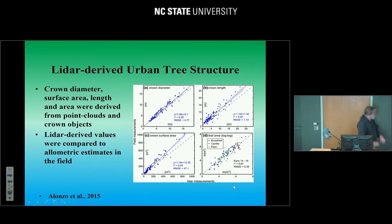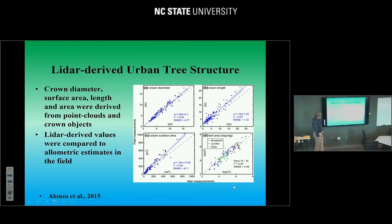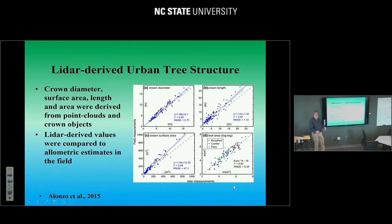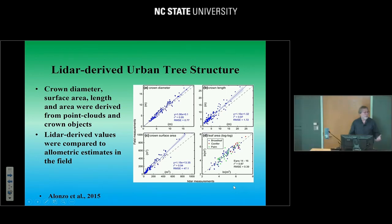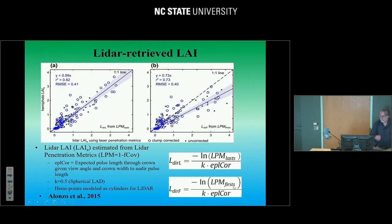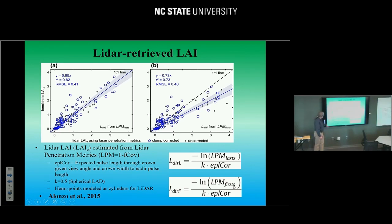He also looked at urban tree structure. He had a whole series of U4 plots developed with a combination of his own work and undergraduate help, comparing plot measurements to various LiDAR structural measures such as crown diameter, crown surface area, crown length, and leaf area on a log-log plot — and they're all pretty well correlated. In terms of forestry applications in the urban environment, LiDAR was doing as well as any plot-based measures. He is also very interested in leaf area index, using hemiphoto LAI for validation. He did calculations for last return and first return LiDAR using a LiDAR penetration metric — one minus fractional cover — with a Beer-Lambert style model. The results were very good, showing high correlation with hemiphoto measurements.